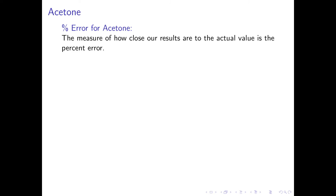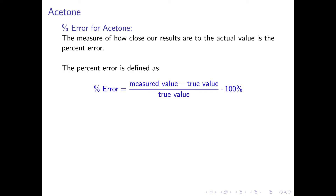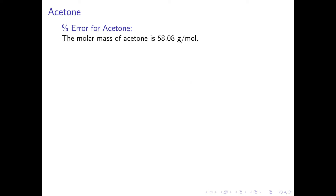At this point, we need a measure of how close our results are to the actual value, known as the percent error. The percent error is defined as the measured value minus the true value, all divided by the true value, times 100%. In this equation, the measured value is the molar mass of acetone that you determined, and the true value is the known molar mass of acetone. We can look up the molar mass of acetone and find it to be 58.08 grams per mole.